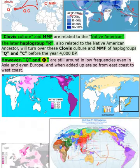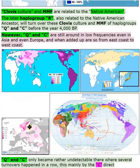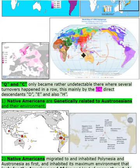However, Q and C are still around in low frequencies even in Asia and Europe, and when added up are present from east coast to west coast. Q and C only became rather undetectable where several turnovers happened in a row — mainly by C's direct descendants: haplogroups D, E, and also H.